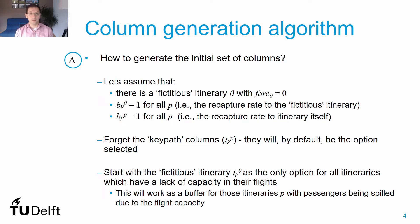We know we always have the possibility to spill passengers to the fictitious itinerary, in which case passengers will be lost and no revenue will be generated. We assume that if we give passengers the possibility to fly their key path they will always accept, and if we allocate them to the fictitious itinerary they will be spilled because they have no other option. We can forget passengers allocated to their key paths, but for all other itineraries we can use the fictitious option as a buffer to find an initial solution. We start by adding decision variables for spillage to fictitious itineraries, which we call itinerary zero.